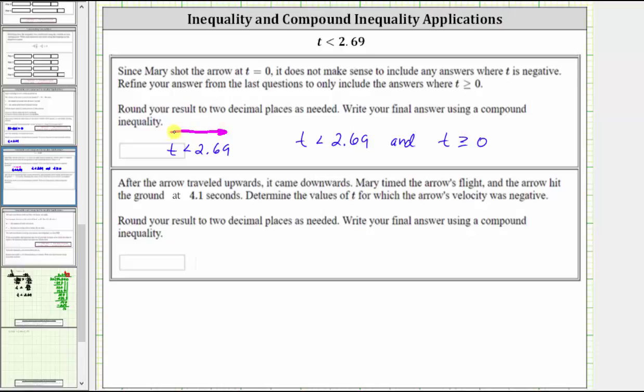Notice this inequality is formed reading it from left to right. But we can express the second inequality forming an inequality from right to left in this direction. We can say that t must also be greater than or equal to zero. This indicates that t is between zero and 2.69, where t equals zero is included and t equals 2.69 is not included.